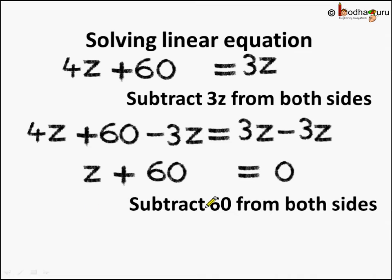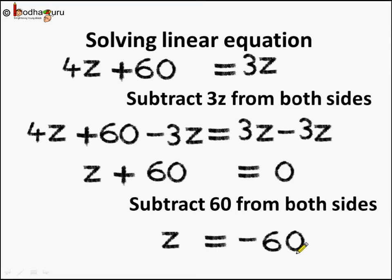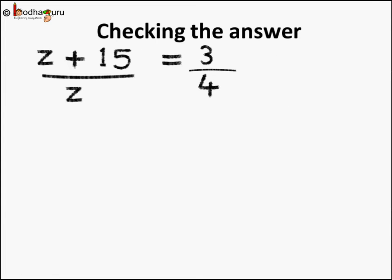Next, we subtract 60 from both sides so that z is alone on the left-hand side with no other constant. So z plus 60 minus 60 becomes z, since 60 minus 60 cancels. On the right-hand side, 0 minus 60 equals minus 60. So we get the solution z equals minus 60.